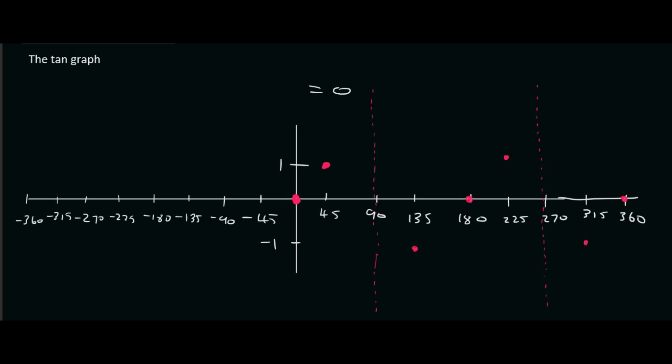Tan of negative 45 is minus 1. Tan of minus 90 is another error. So you just draw dotted lines. Tan of minus 135 gives us a positive 1. Tan minus 180, tan minus 225 gives us negative 1. Tan negative 270 gives us another error. Tan of minus 315 gives us 1. And then tan minus 360 gives us 0. Now we've got to connect this.